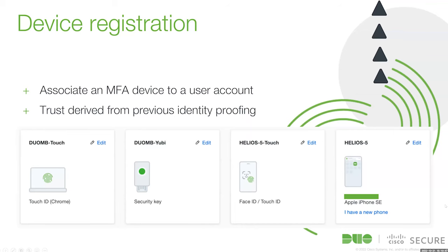Device registration is the initial step when you are associating an MFA device — this might be your roaming authenticator, like your phone or biometric device — to your account. Once you do that, that device can be used to confirm MFA attempts in the future. And that trust in that MFA device comes from the chain of trust from whatever started that identity proofing.